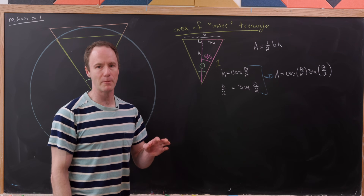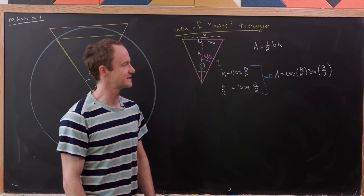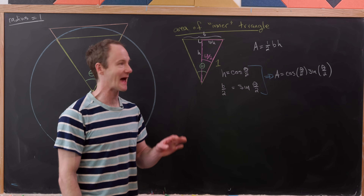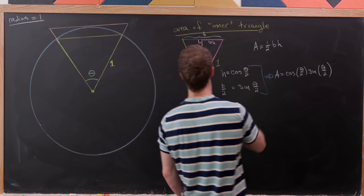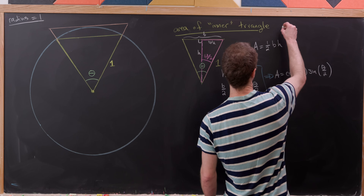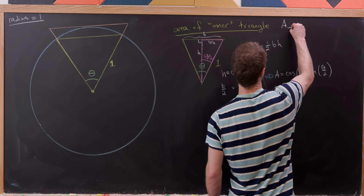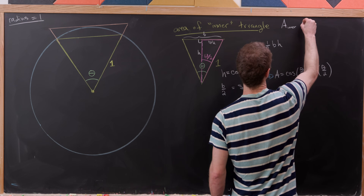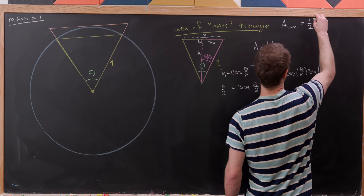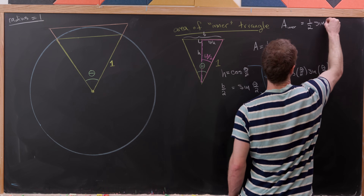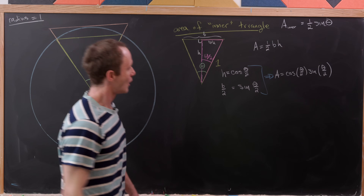By the well-known double angle formula, cosine(θ/2)·sine(θ/2) is simply equal to half the sine of theta. So the area of the inner triangle is equal to one half times sine of theta.